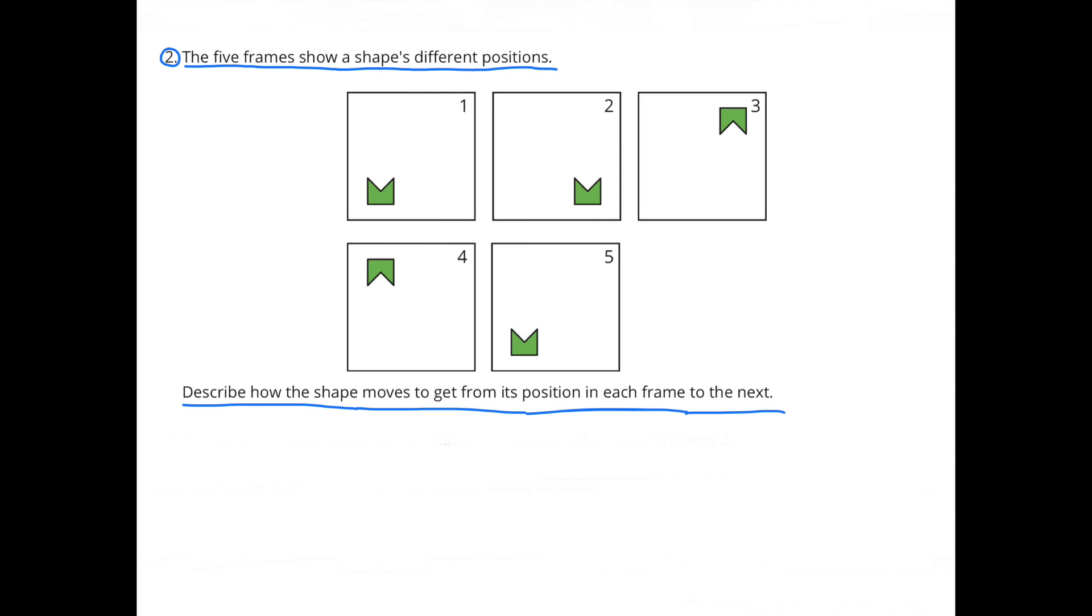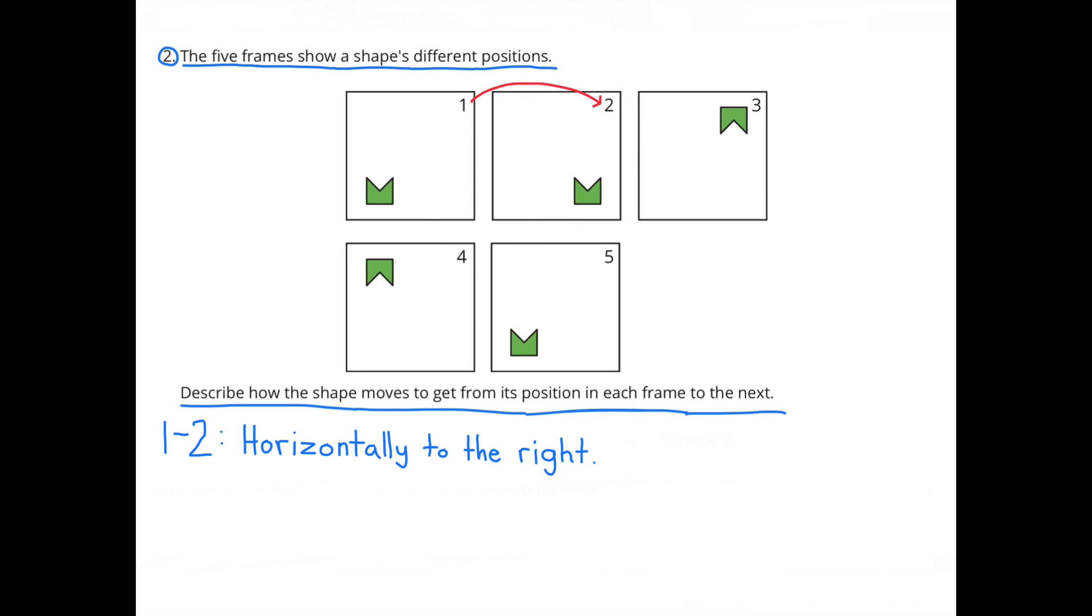Number 2. The 5 frames show a shape's different positions. Describe how the shape moves to get from its position in each frame to the next. How can you describe the movement of the shape from frame 1 to frame 2? From frame 1 to frame 2, the shape moved horizontally to the right.